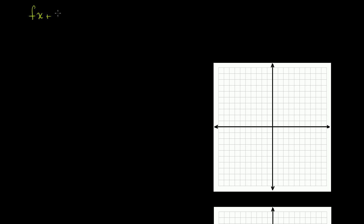When I showed you the proof of why that works, I multiplied fx plus g times hx plus j. And when I multiplied them, I did the first term — I said fx times hx. When I did it in the last video, I just wrote fhx. And we know that that's not true. We have f times h times x times x, so it's fhx squared.